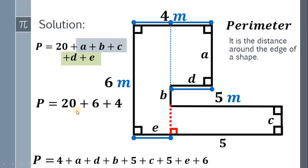Therefore, the perimeter is simply 20, plus 6, plus 4, or simply 30 meters. And we're done.